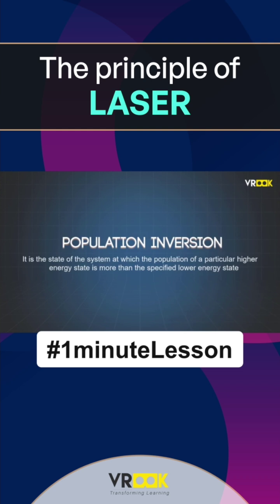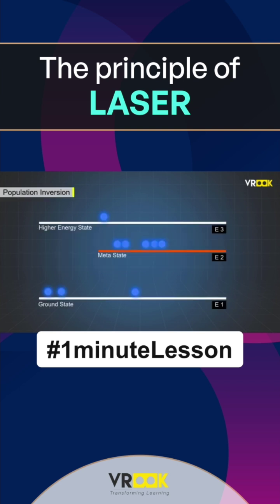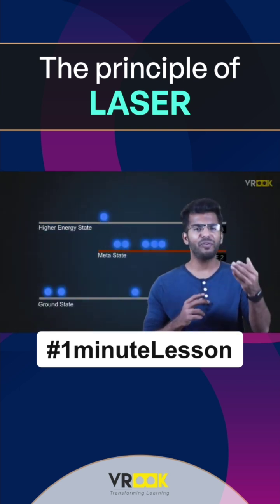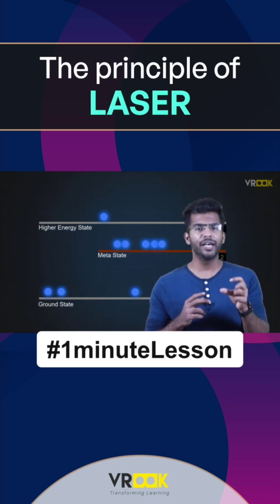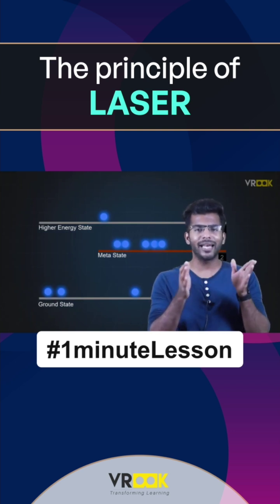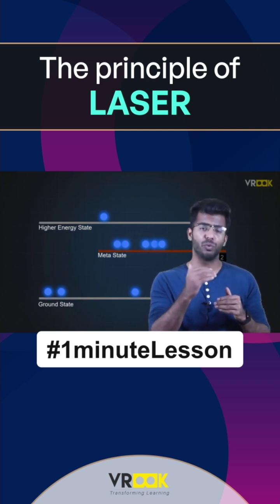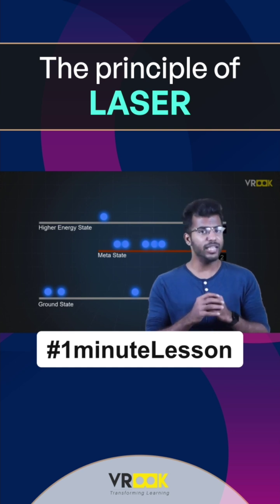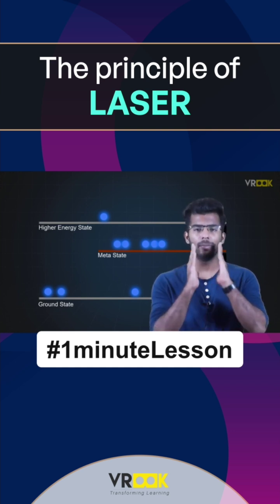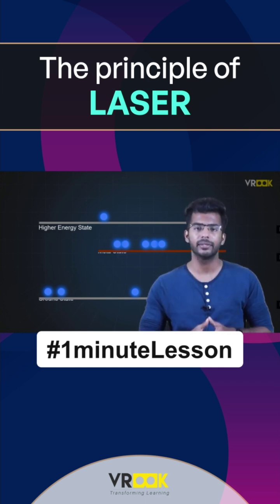Population inversion is the state of the system at which the population of a particular higher energy state is more than the specified lower energy state. In lasers, when we have a population inversion, more number of atoms will undergo stimulated emission and release more number of highly directional photons. These photons build up to form a laser line.